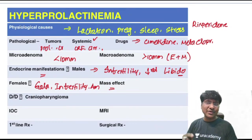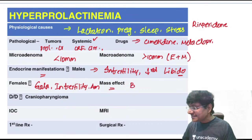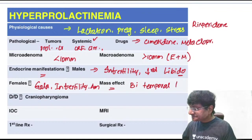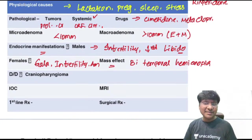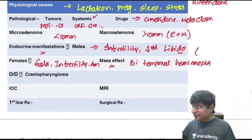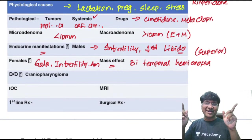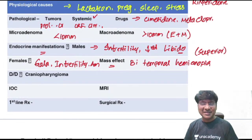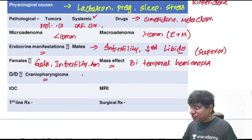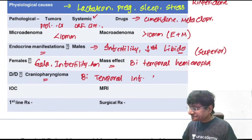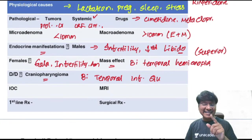In macroadenoma, mass effect causes bitemporal hemianopia, which initially starts as bitemporal superior quadrantanopia. Craniopharyngioma, by contrast, causes bitemporal inferior quadrantanopia. Craniopharyngioma also causes features of hyperprolactinemia.